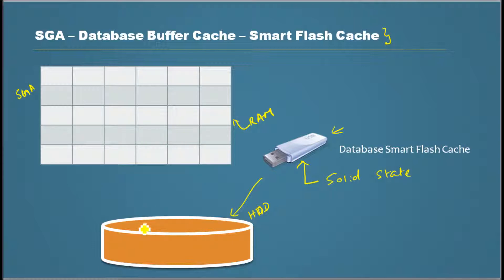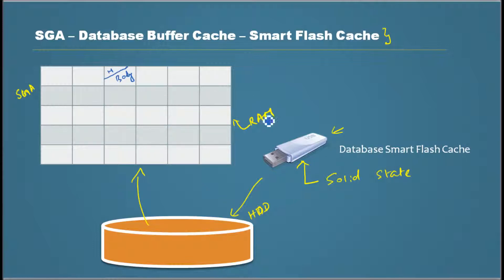When data is read from disk, it goes to the database buffer cache. In the buffer cache, the header information is stored and then the body of the data — the buffer is stored. In a regular scenario where a smart flash cache device is not attached to the computer, things are pretty simple. The data goes from here to the buffer in memory or RAM and then it comes to the hard drive.